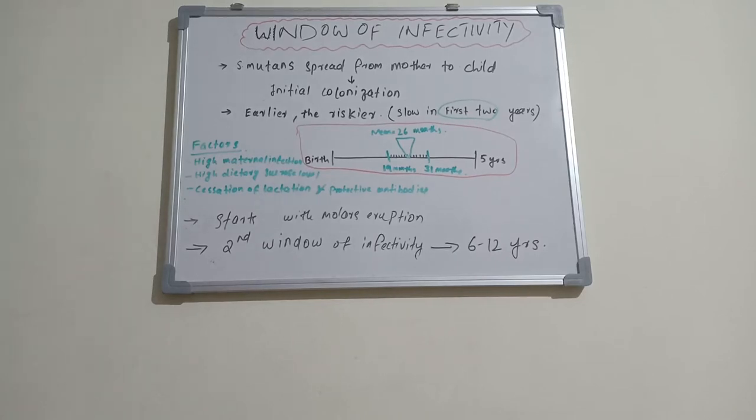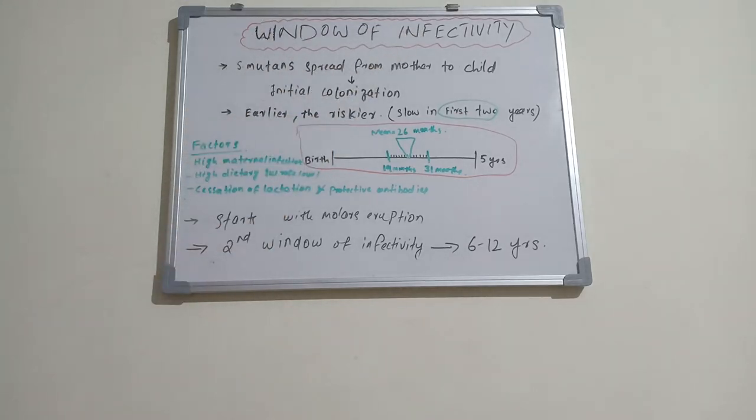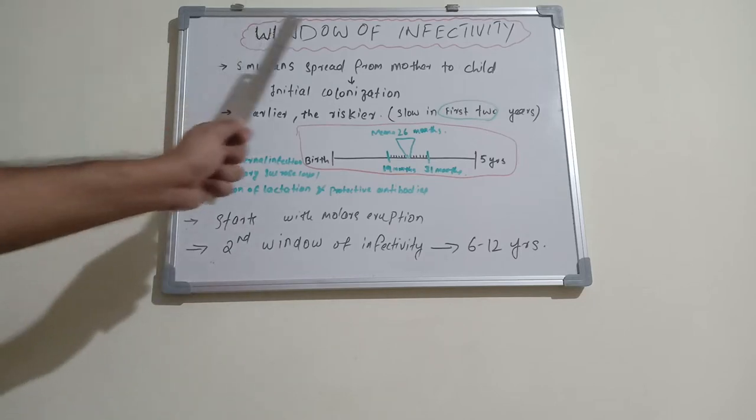Hello everyone, welcome back to a new session on Dentistry and More. Today's topic is window of infectivity. As we all know, dental caries is caused by bacteria Streptococcus mutans. Dental caries is a bacterial infectious disease which causes destruction of tooth by acting upon sucrose and producing lactic acid, which ultimately leads to cavitation.